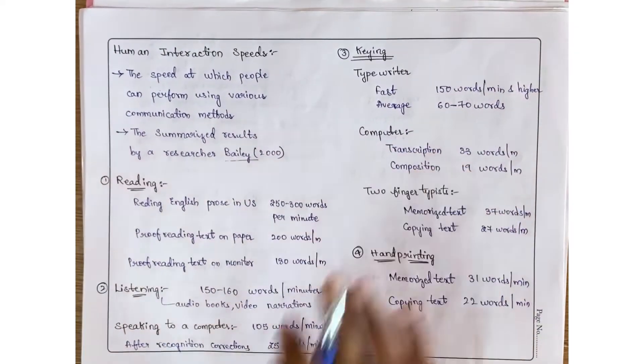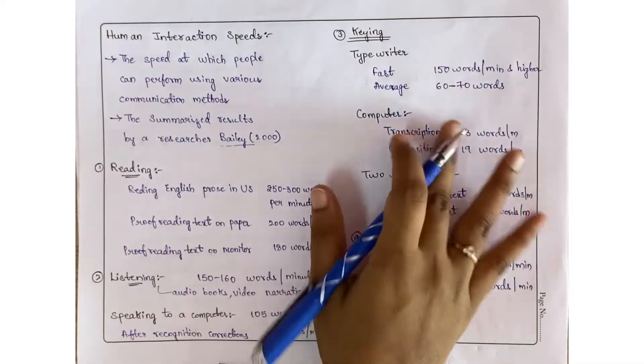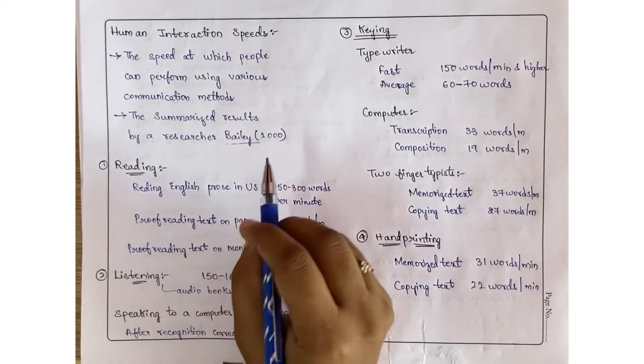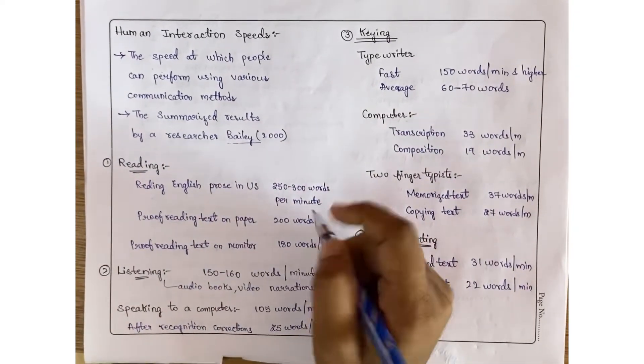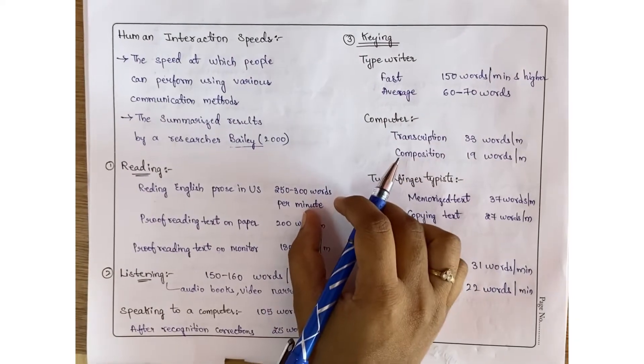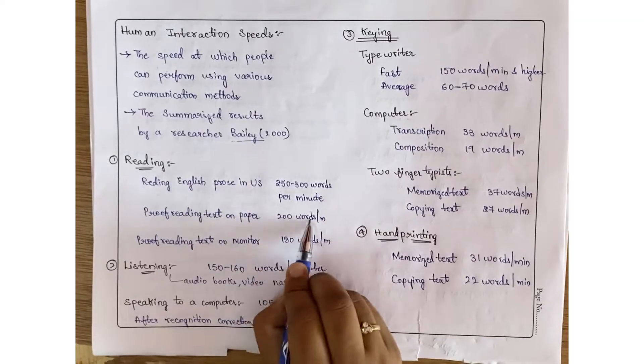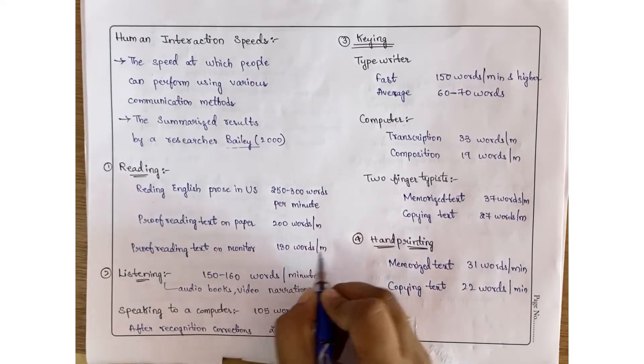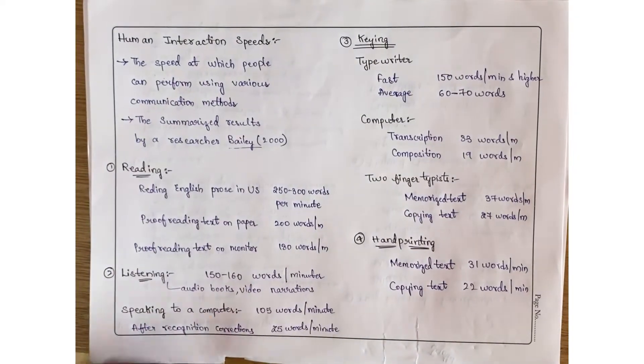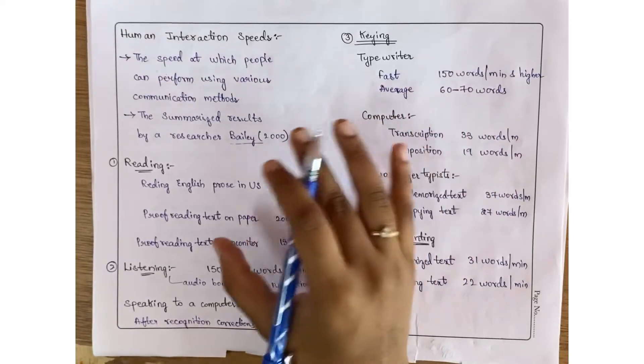Starting with reading: reading English prose in US accent is 250 to 300 words per minute. Reading text on paper is 200 words per minute, and reading text on a monitor is 180 words per minute. This research was conducted on several people.